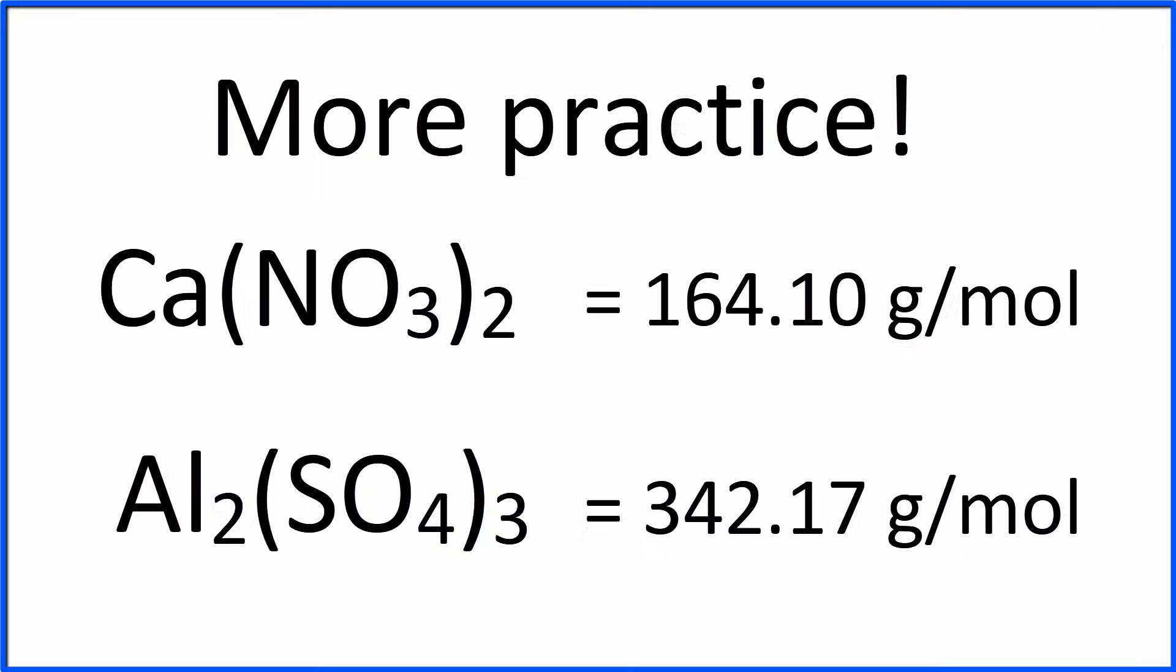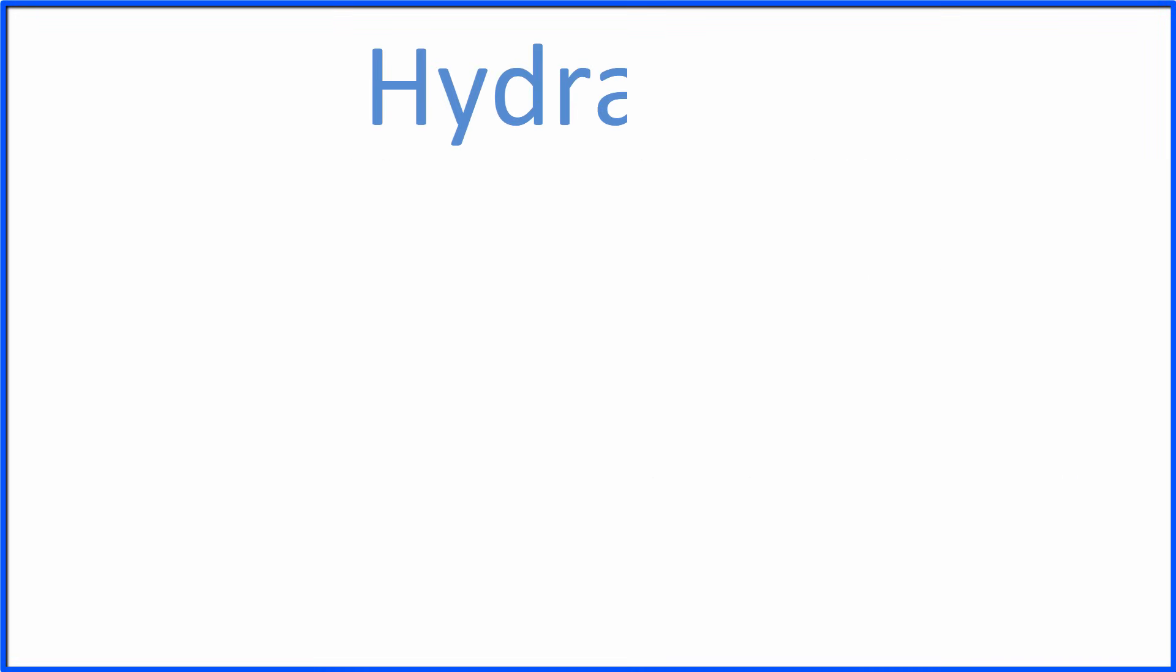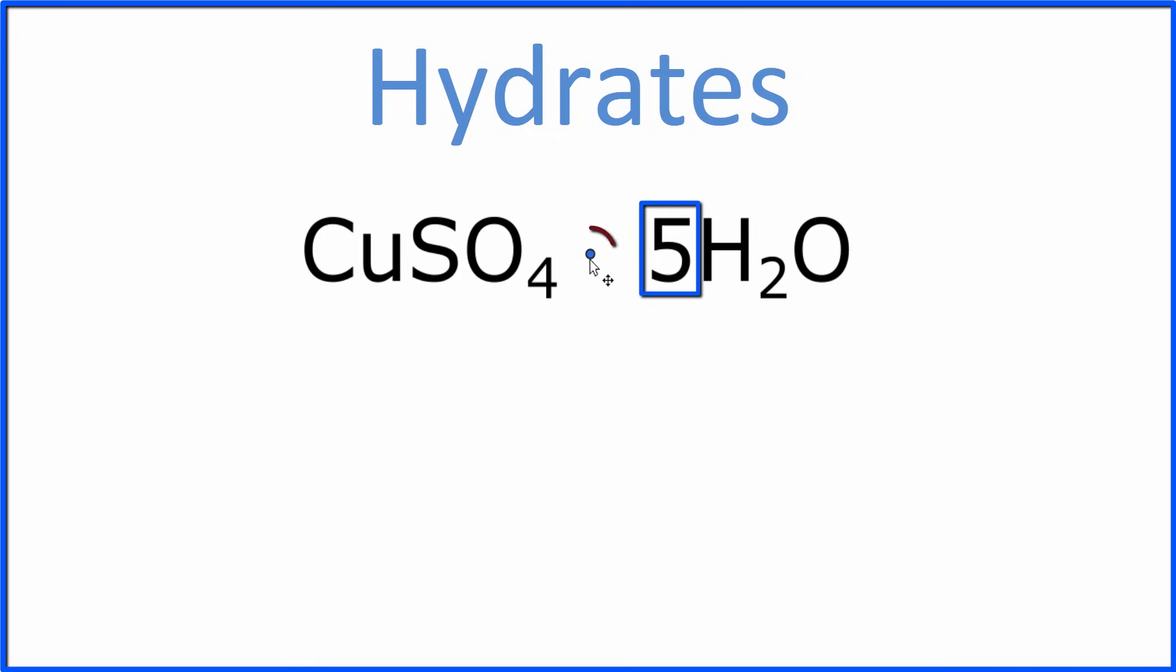There's one more type of molar mass we need to learn to calculate, and that's for what's called a hydrate. This is copper 2 sulfate pentahydrate. Penta means 5, and the little dot means those 5 water molecules are around the copper. To calculate the molar mass, we'll first find the molar mass of the copper sulfate, and then we'll find the mass of the water.